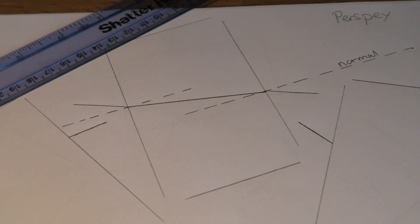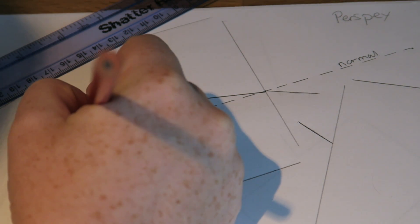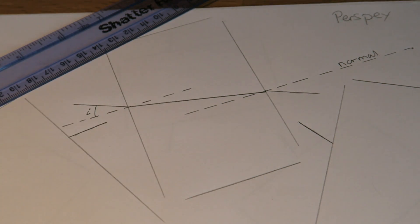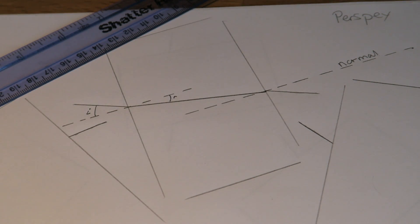Now, we need to measure our angles of incidence and our angles of refraction. This one here is our angle of incidence. There is our angle of refraction. We always measure it against the normal.